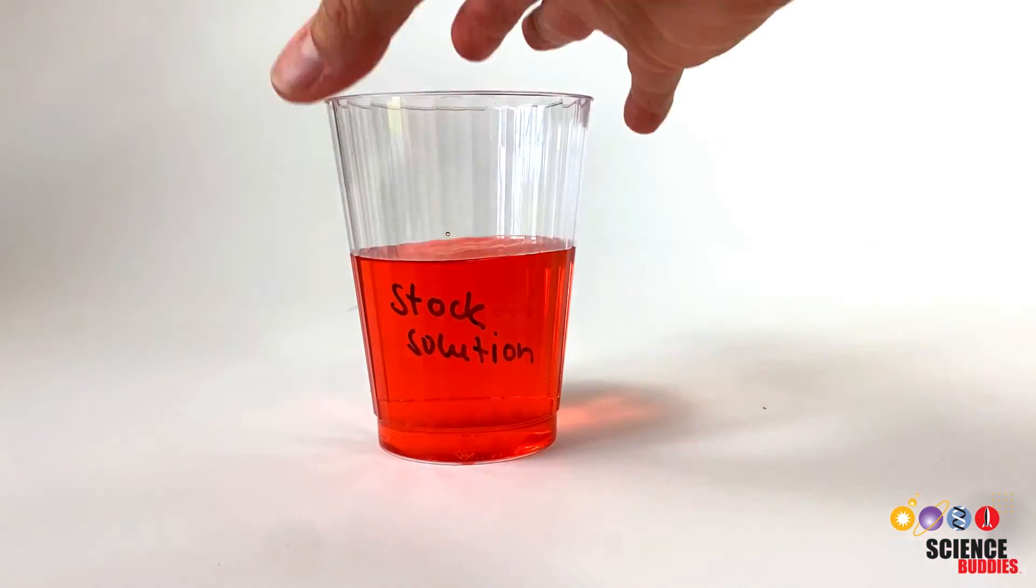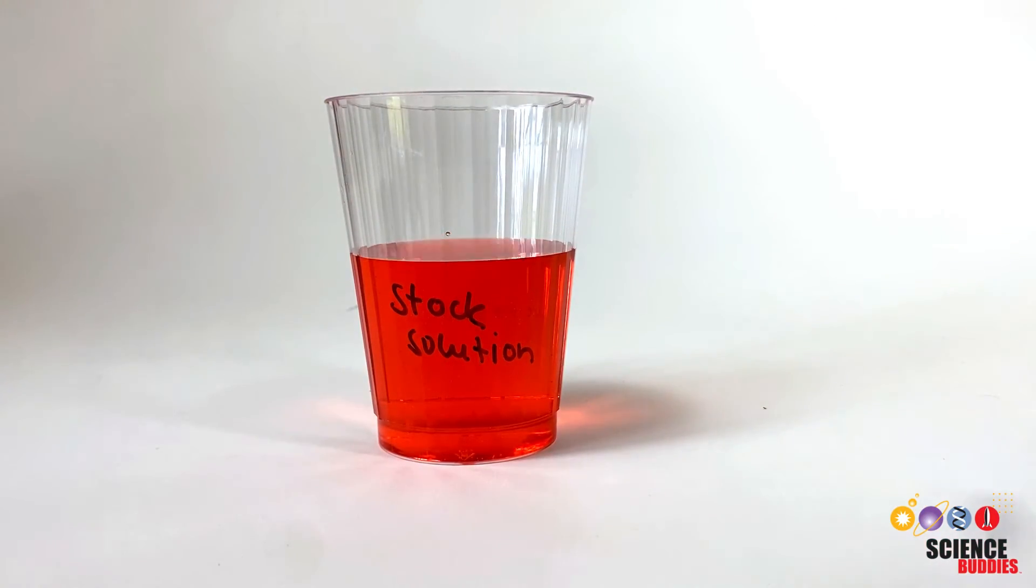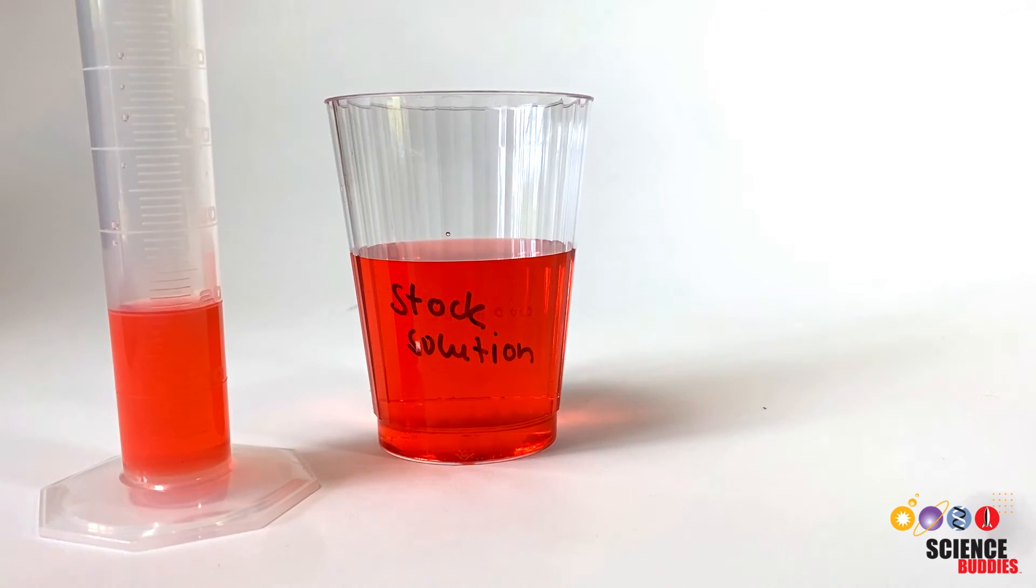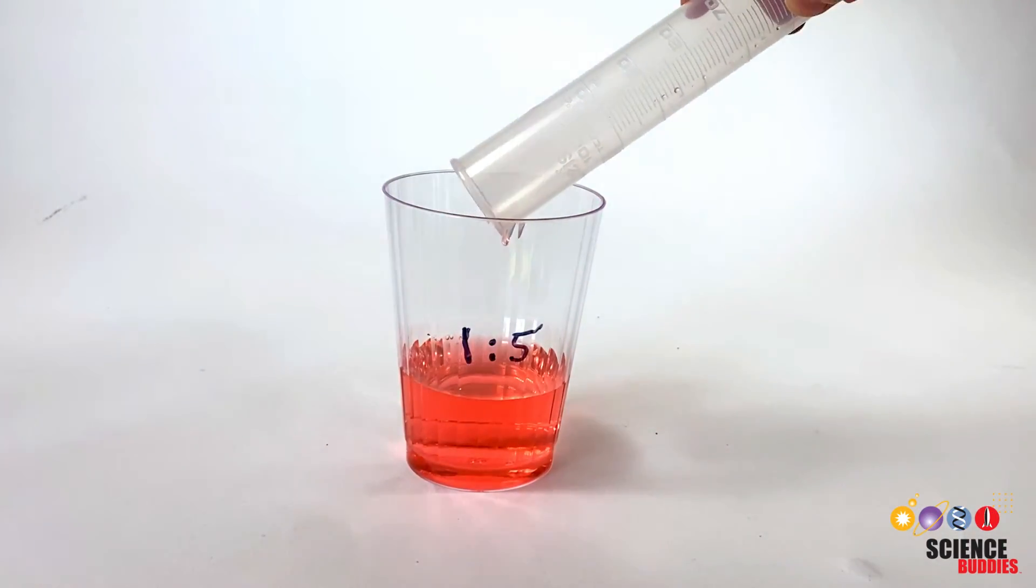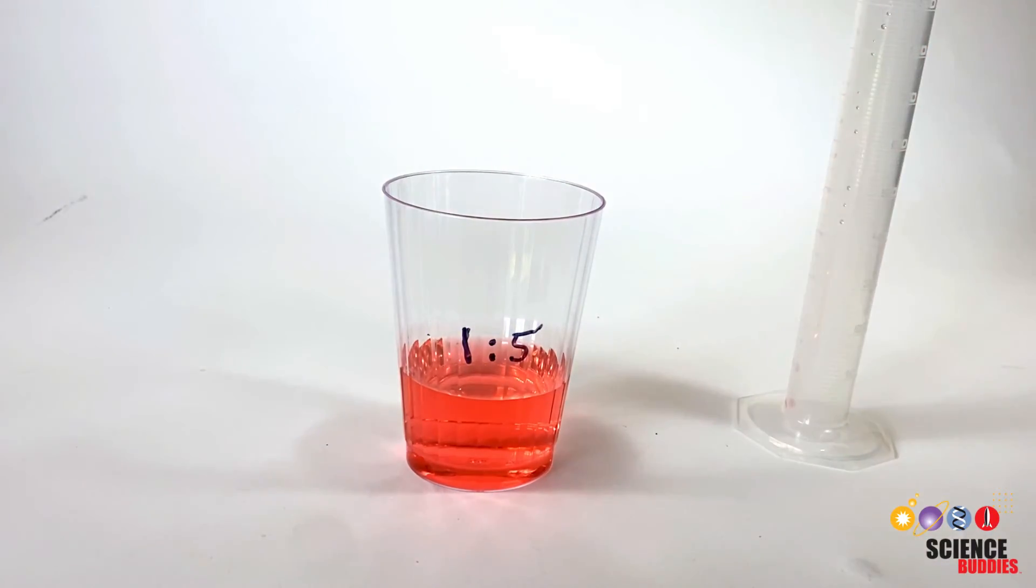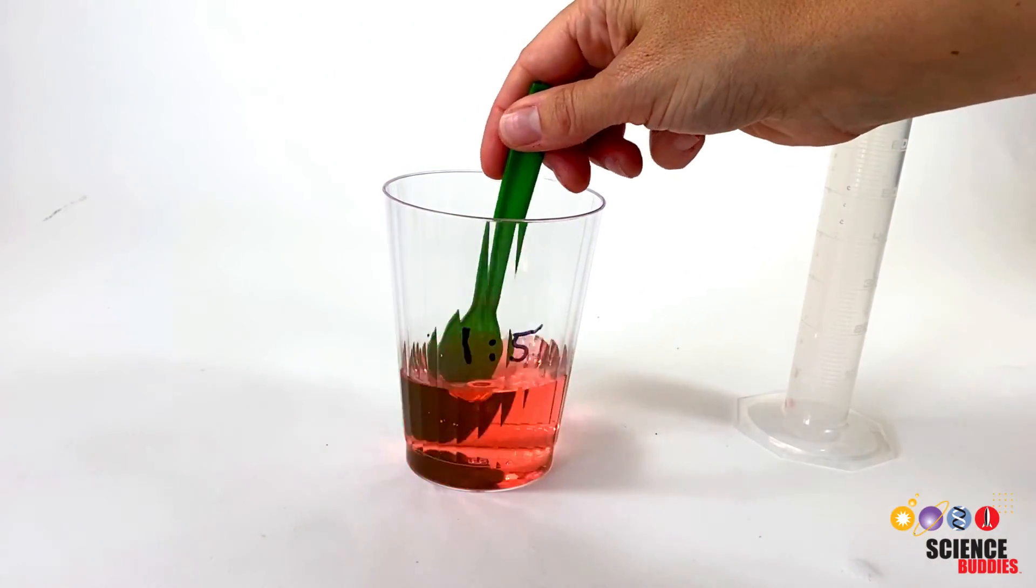Next, we need to add the desired volume of our stock solution. We can measure the required volume in a graduated cylinder or use a graduated transfer pipette for smaller volumes. We add the stock solution to the water and stir until everything is evenly mixed. Now, our 1 to 5 dilution is ready.